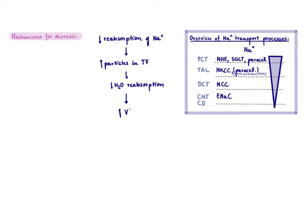In the distal convoluted tubule we have NCC, where about 5 to 10% of sodium reabsorption happens, and then a little bit is left for ENaC, which is located in the connecting tubule and collecting duct. So if you want to block sodium reabsorption, you should block any of these transporters. The most effective diuretic would block sodium reabsorption in the proximal convoluted tubule, but since there are several transporters responsible, blocking just one only blocks part of that two-thirds.